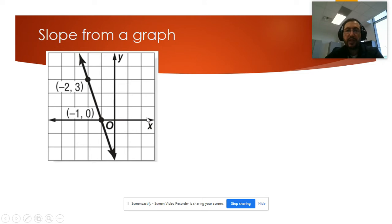So when we have the graph, we can use rise over run. Rise over run means how many units I'm moving up and down divided by how many units I will move left to right.